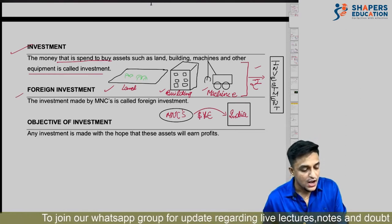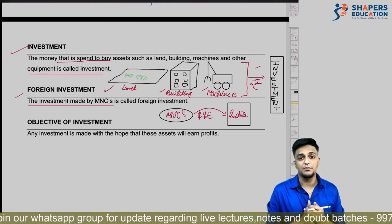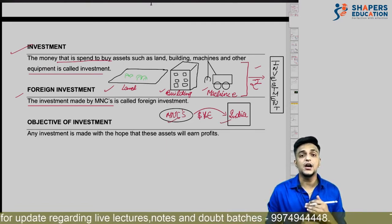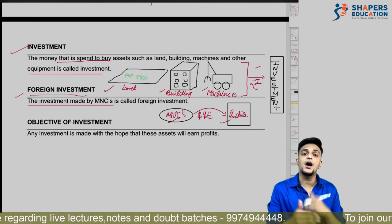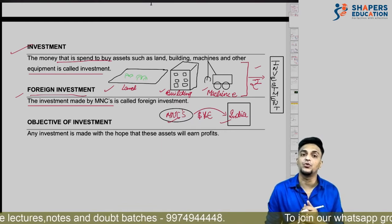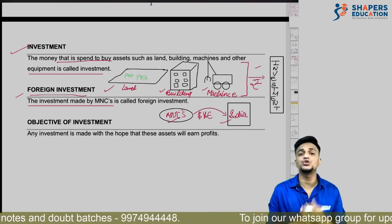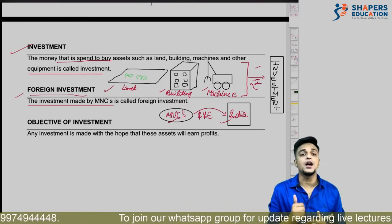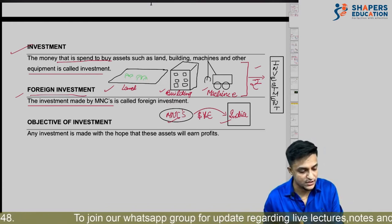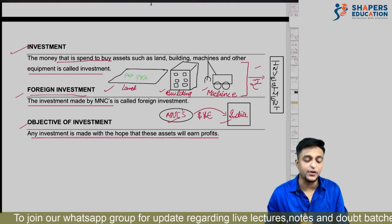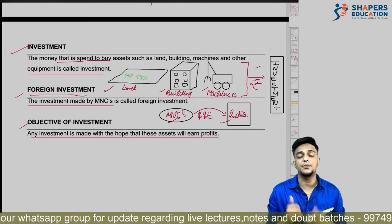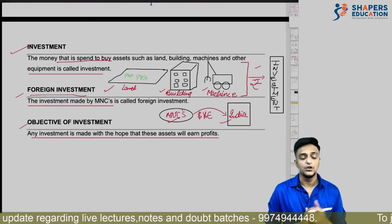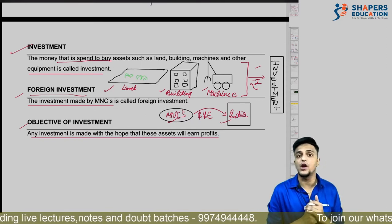Foreign investment: the investment made by MNCs. If any multinational company invests money — a foreign company coming to India and investing — that is called foreign investment. The objective of investment: any investment is made with the hope that these assets will earn profit. The main objective is to invest and earn profit or returns.